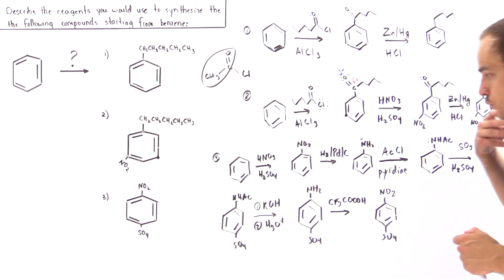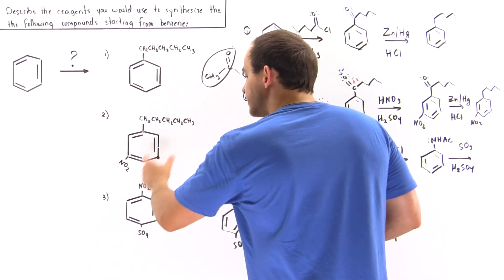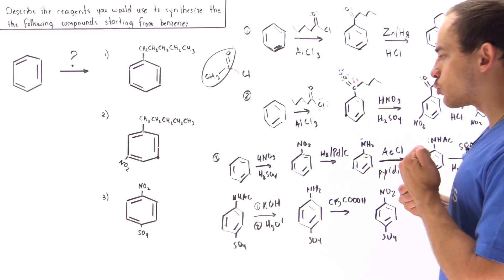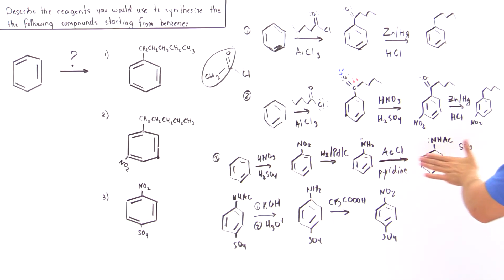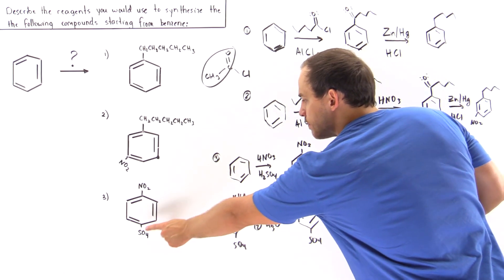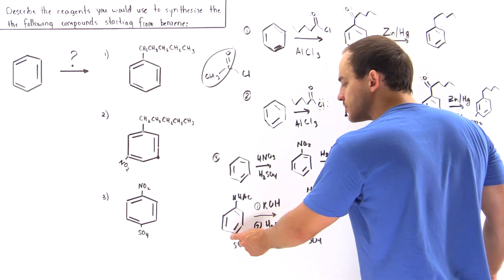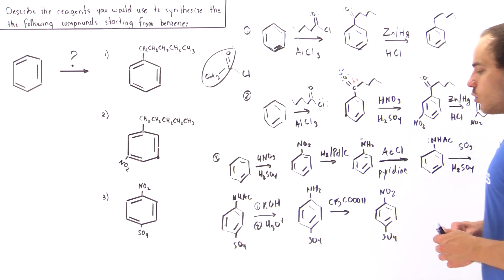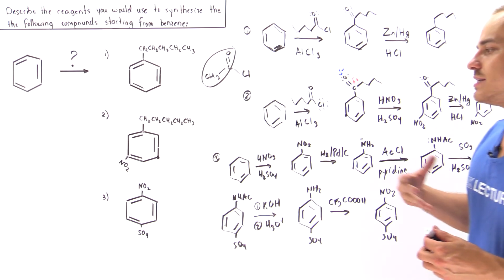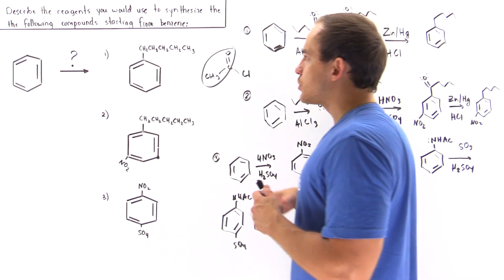We can see how many steps were required to go from the benzene starting material to this product. The primary reason is that we had to convert our meta-directing NO2 group to an ortho/para-directing group — following all those steps to create the acetamide — then place the SO4 group at the para position, and finally convert the group back into our NO2 group. That concludes this example.